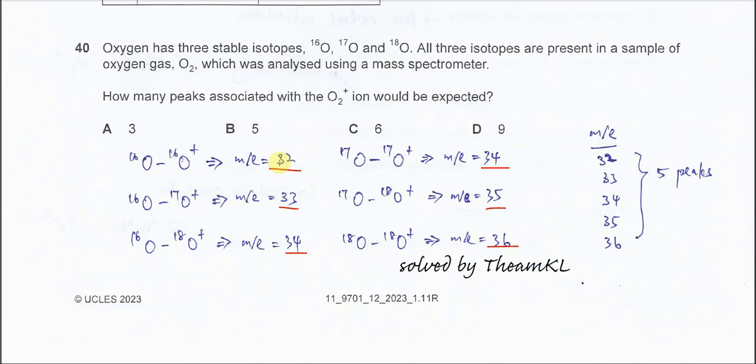So we have 32, 33, 34, 35, 36. Total is 5. So it's going to show 5 peaks, 5 different M/E values. So the answer is B.